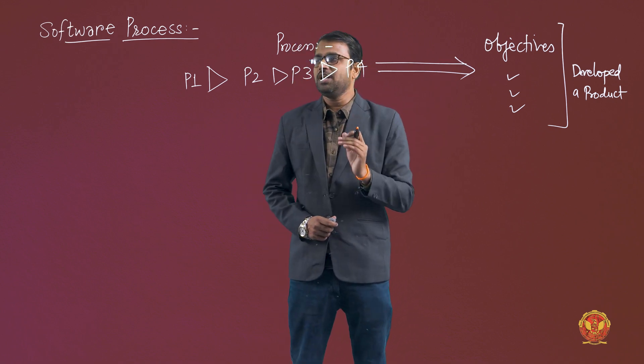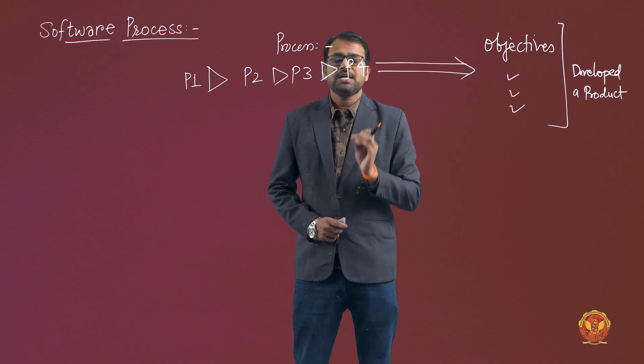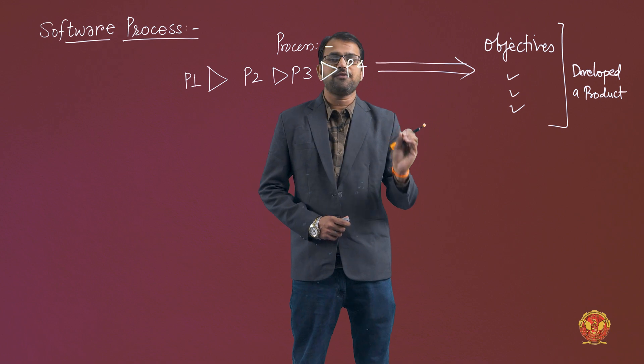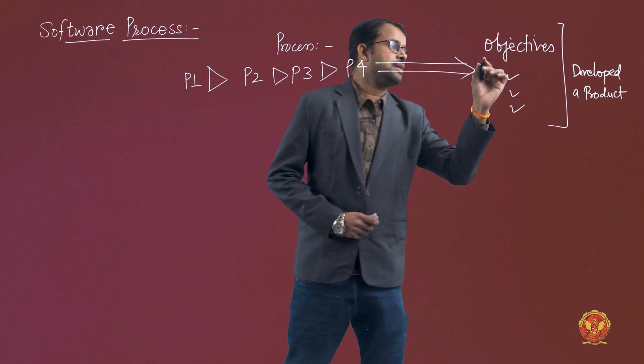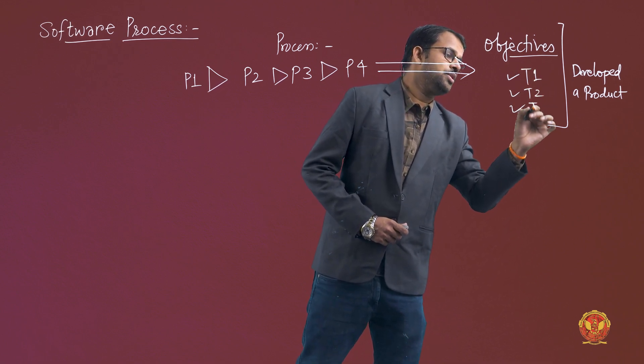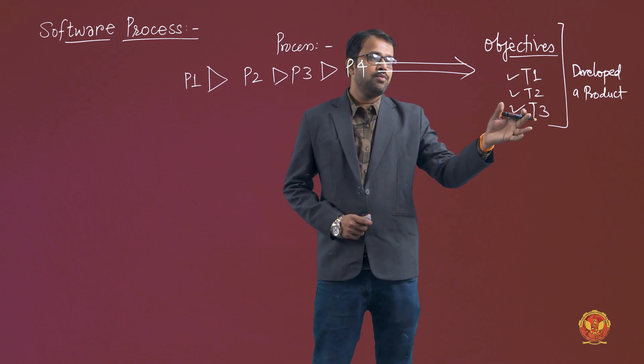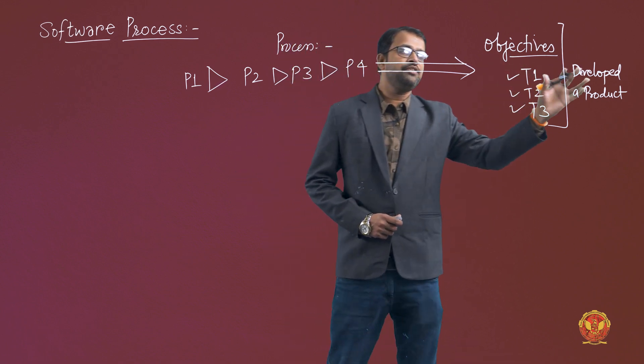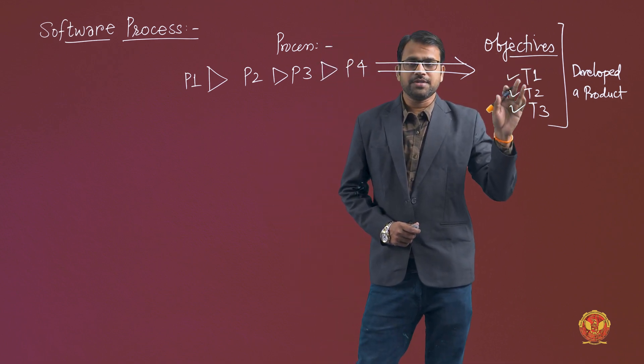So a process model defines the following steps. The first one, a set of tasks that need to be performed. So as you know that some objectives were already set. So task one, task two, task three, we can say that. So these tasks were the combination of the solution we need. So these tasks have to be accomplished first.